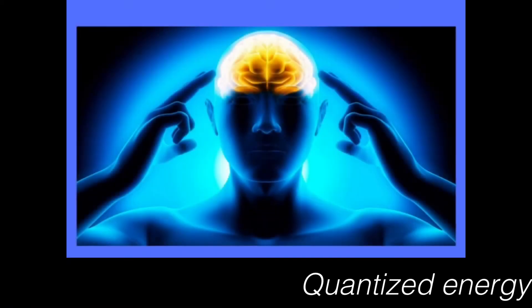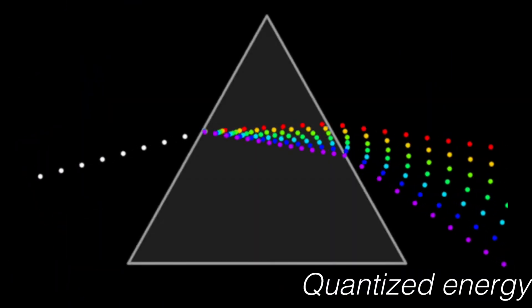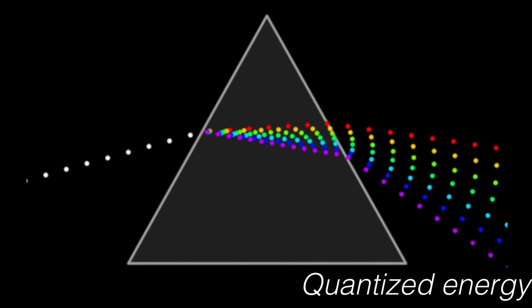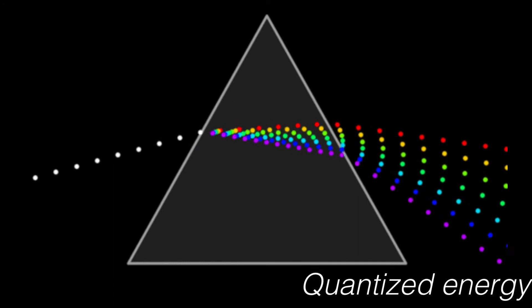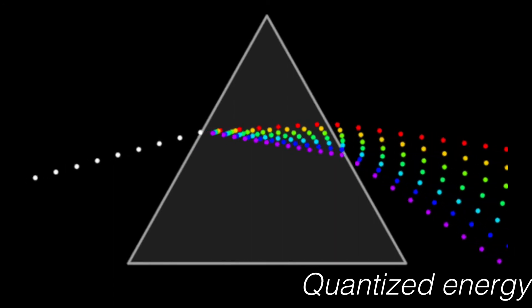To visualize this phenomenon, we can use a triangular prism. Some of you may try to shine sunlight into a triangular prism to create a rainbow before. The prism separates the sunlight into many different colors. Each of them correspond to a different frequency.